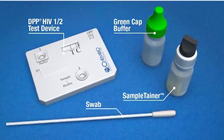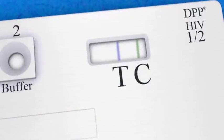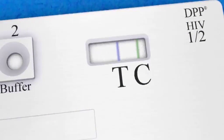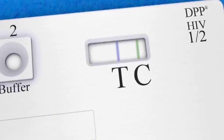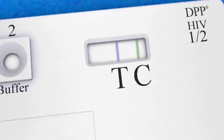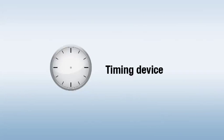Note that the DPP test device has two colored lines in the test window. One is blue and the other is green. Materials required but not provided include a clock, watch, or other timing device.